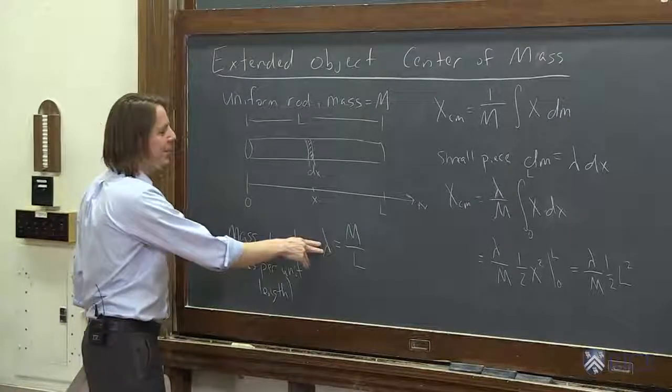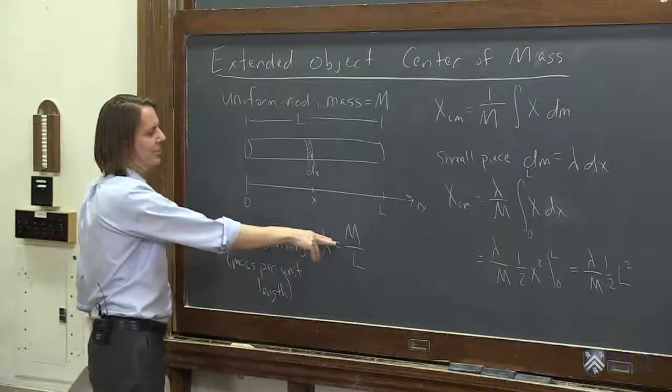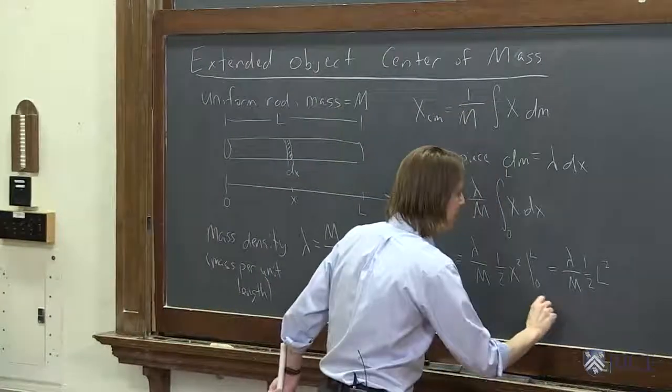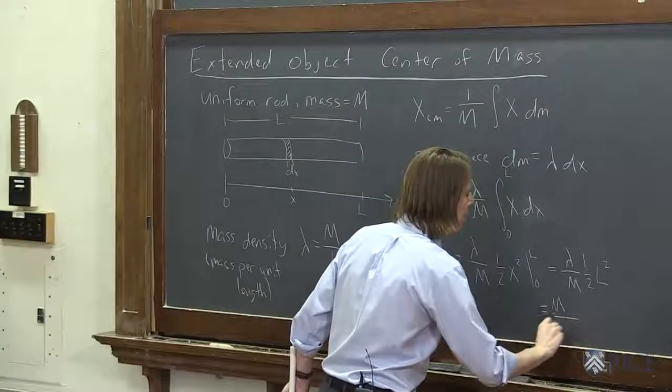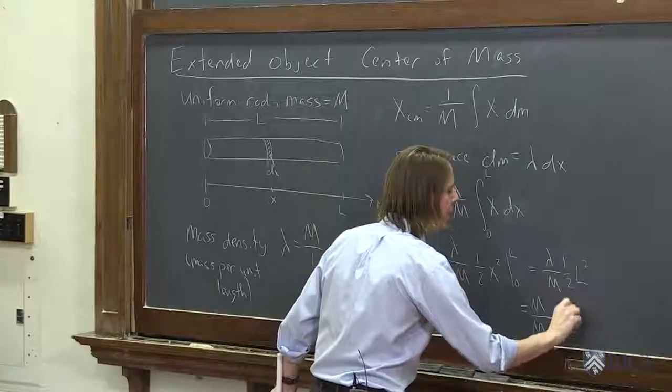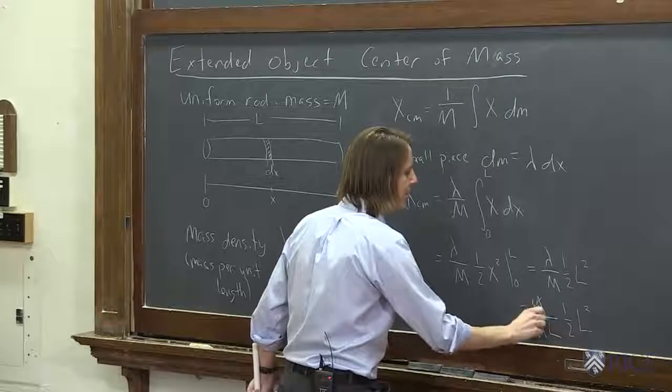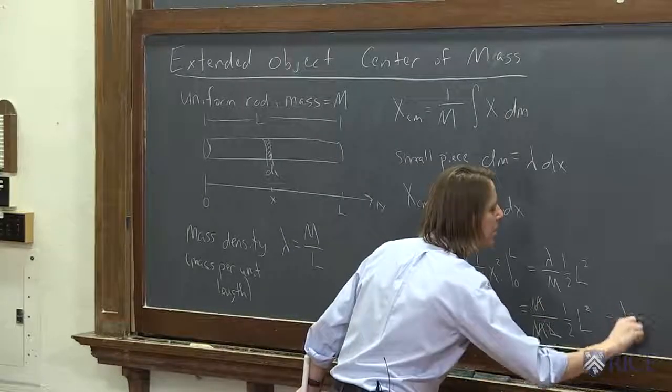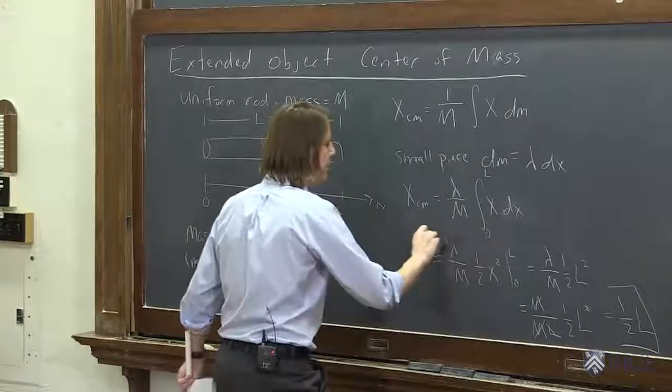So if we substitute lambda to be big M over L, you see what's going to happen. This is going to be big M over big M L. There's lambda. 1 half L squared. Then the masses go away, one of the L's goes away, and we get 1 half L for the center of mass.